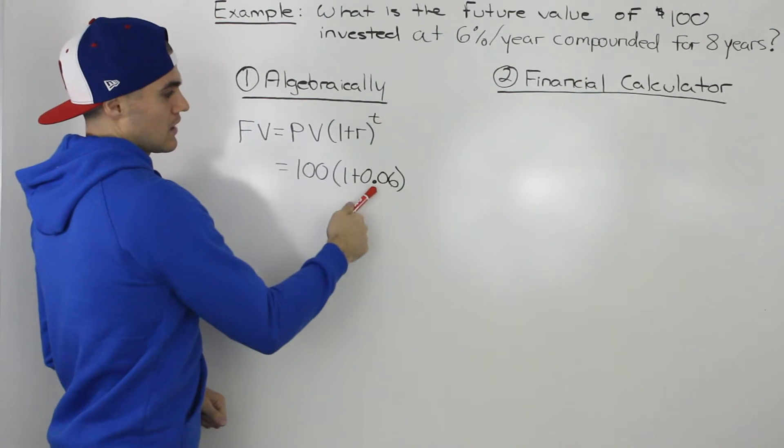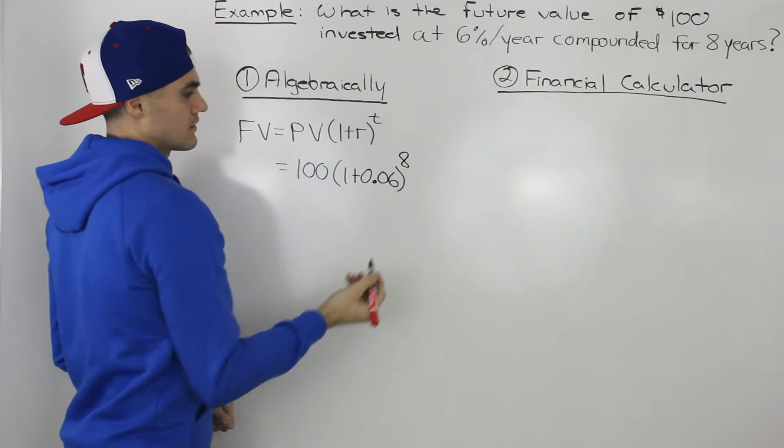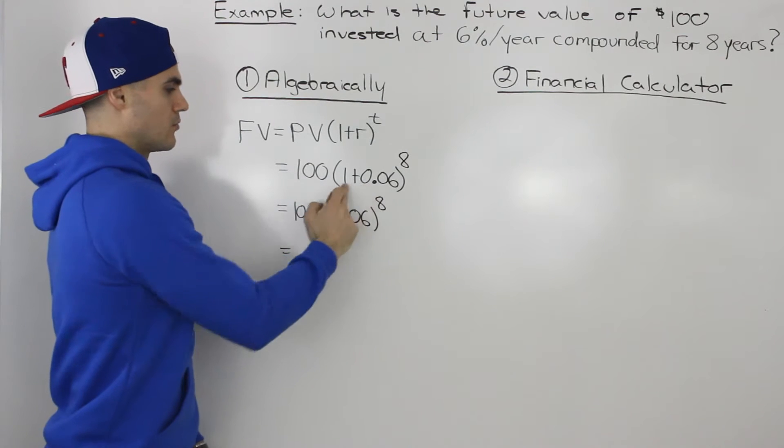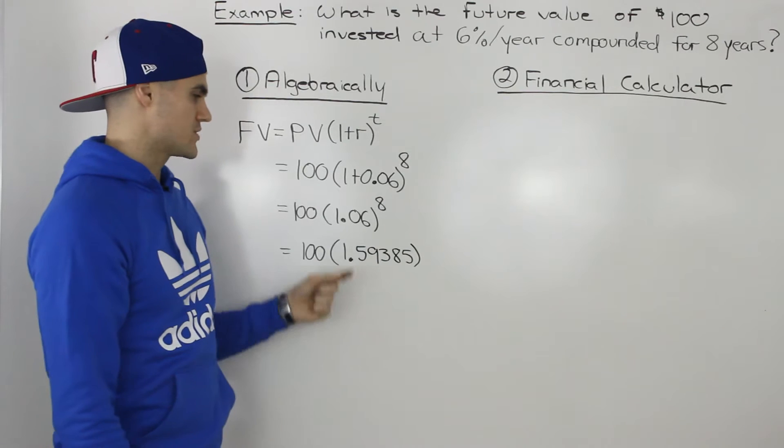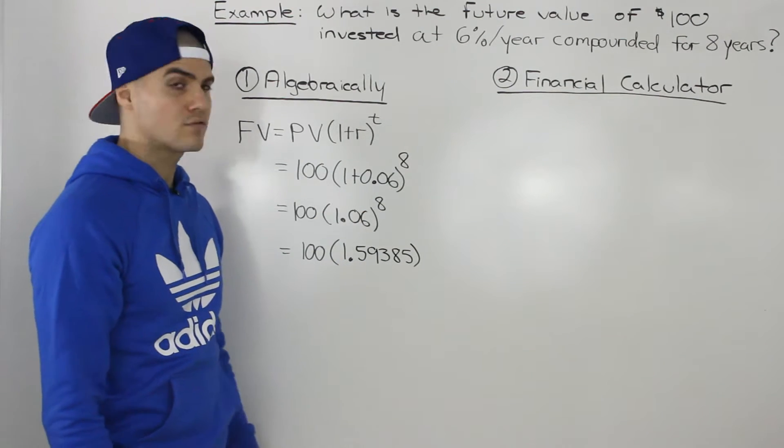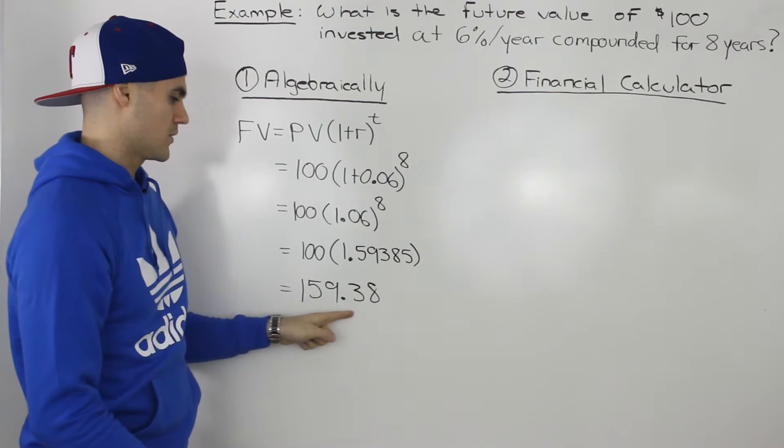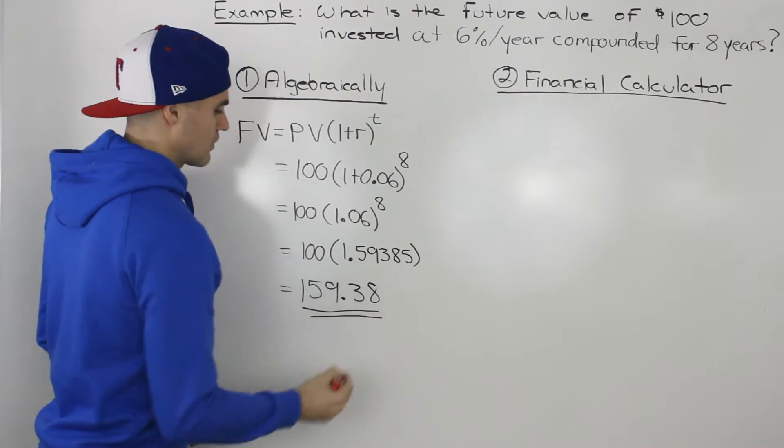So anyways, the rate is 6% and it's for 8 years. So then adding the bracket, 1 plus 0.06 would give us 1.06, and then 1.06 to the power of 8 would give us 1.59385, and then multiplying those out, we would end up with a final future value of $159.38.